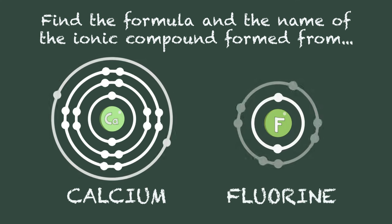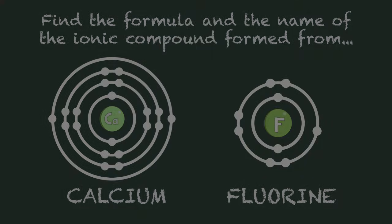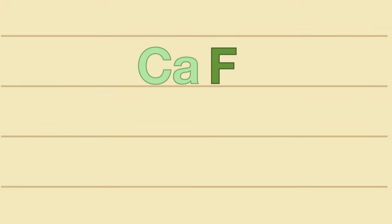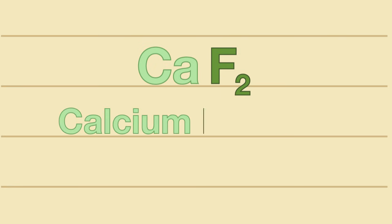Find the formula and the name of the ionic compound formed from calcium and fluorine. Please pause the lesson and resume once you are done to check the answer. The formula is CaF2, with the two written in subscript and the name is calcium fluoride.